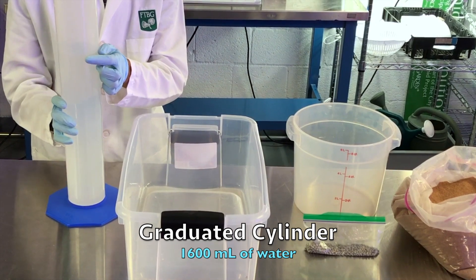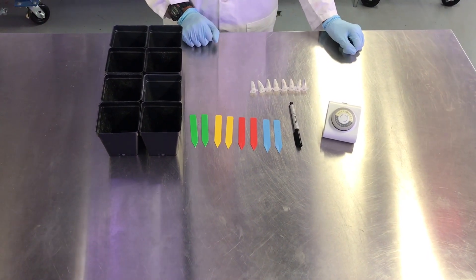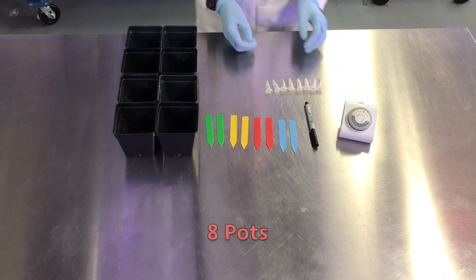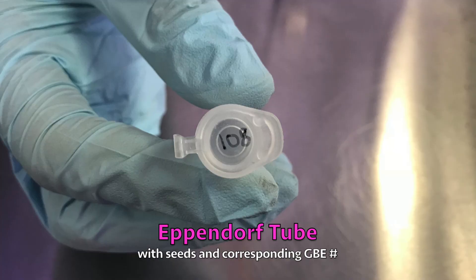You will also have these materials: eight pots to place the medium in, Eppendorf tubes with seeds and the corresponding GBE number.